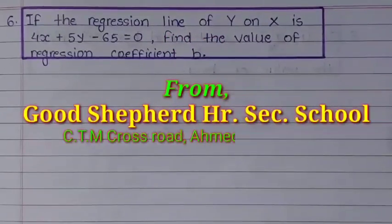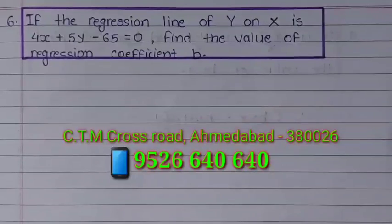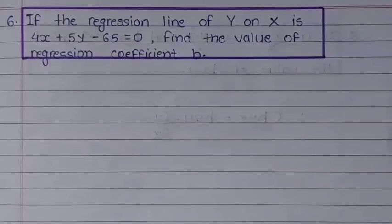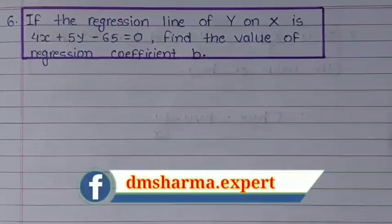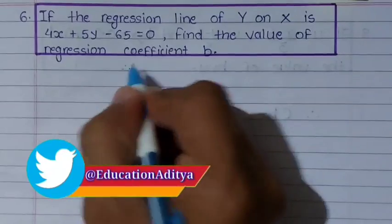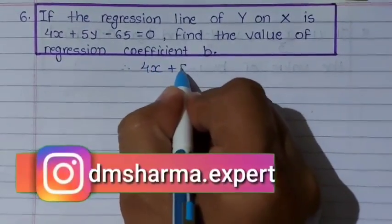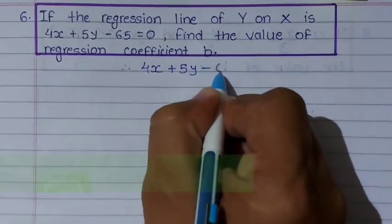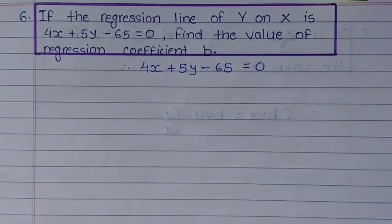Sum number 6: if the regression line of y on x is 4x + 5y - 65 = 0, find the value of regression coefficient b. In this sum we are given only this equation 4x + 5y - 65 = 0 and we have to find the regression coefficient b.